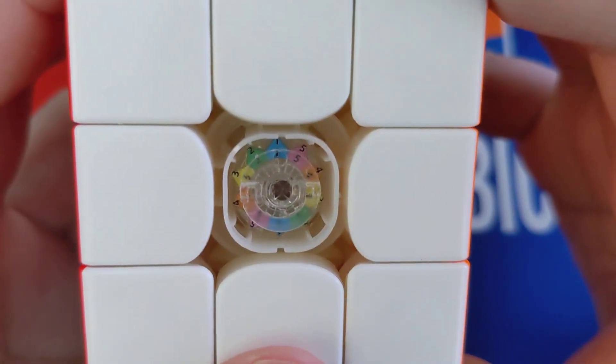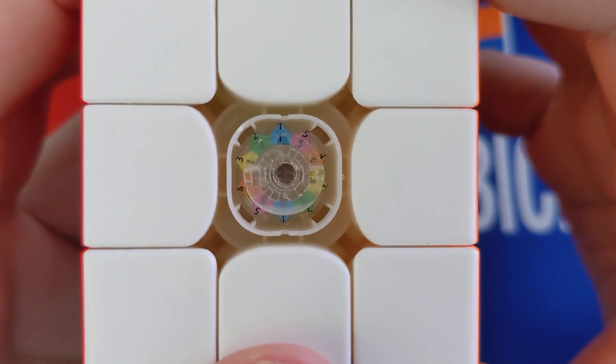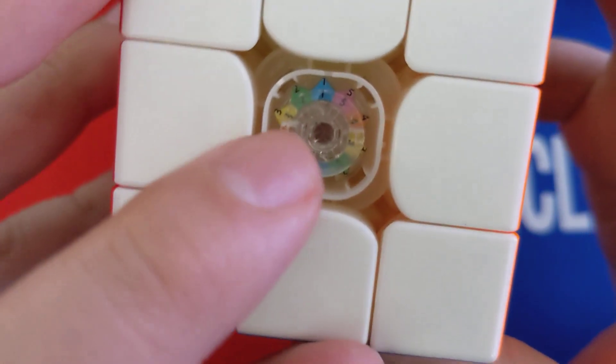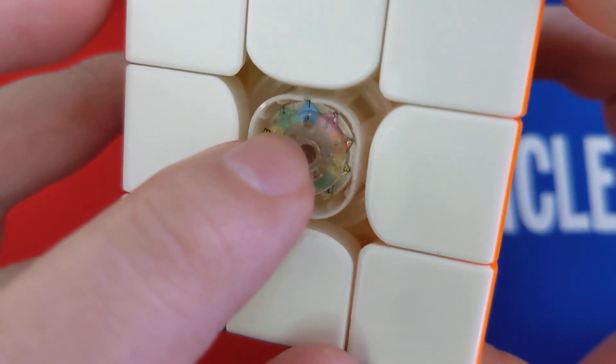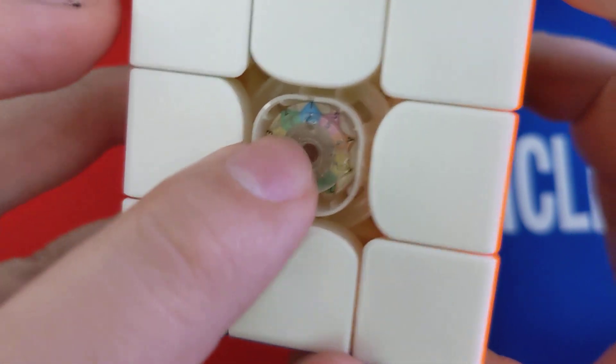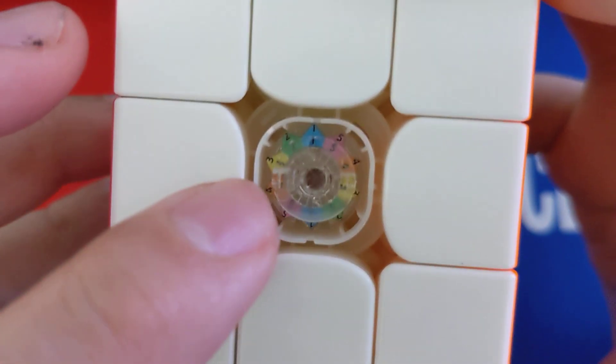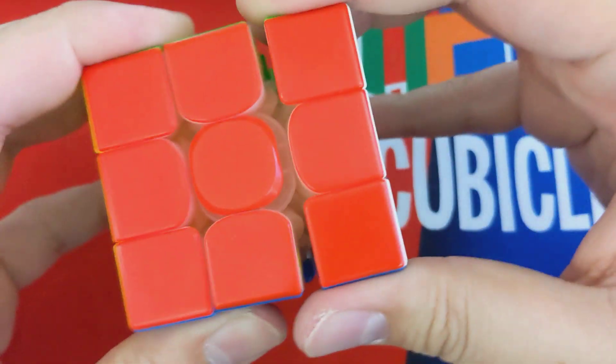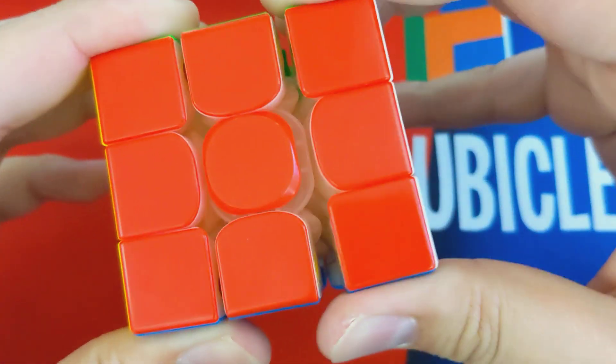So these little notches is basically what setting you're on. So here I have it on one, and then there's going to be a little hole on that inner ring showing what your compression is. So this means that this is currently on one tension, one compression. This usually means it's going to be the loosest.